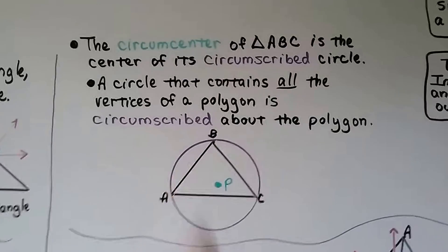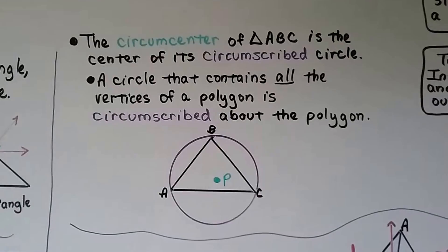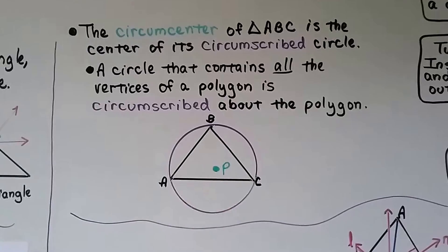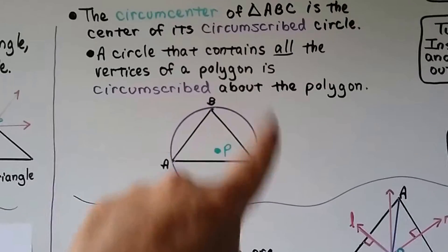Pretend that the triangle isn't there. Point P is the center of the circle. Once we put the triangle back, we can see that its circumcenter is down here in the triangle. But it's in the center of the circle.